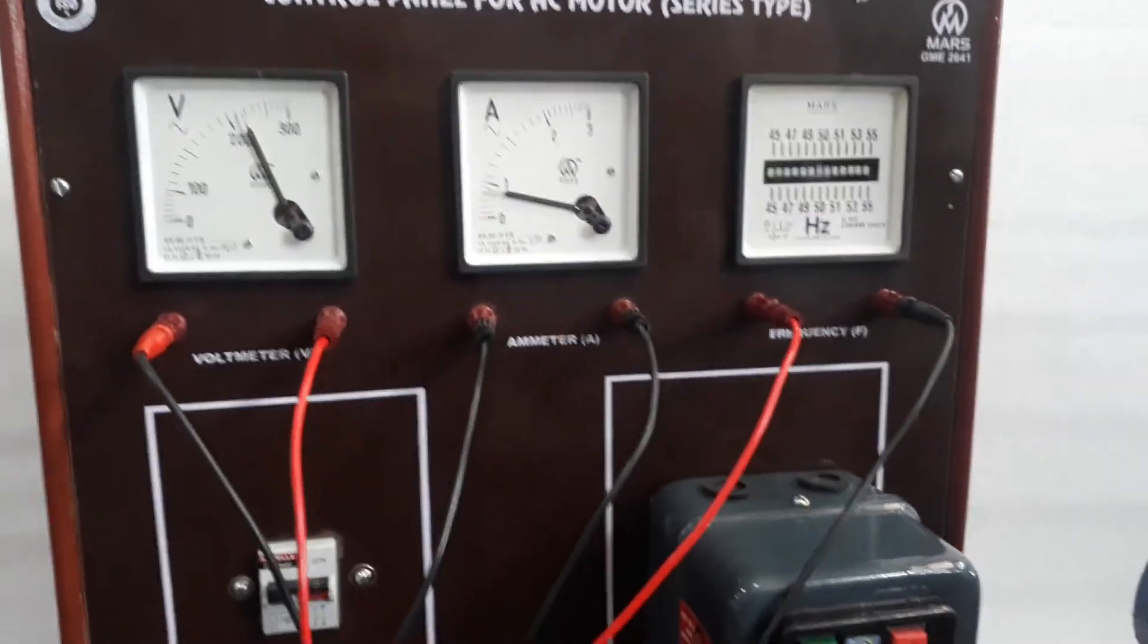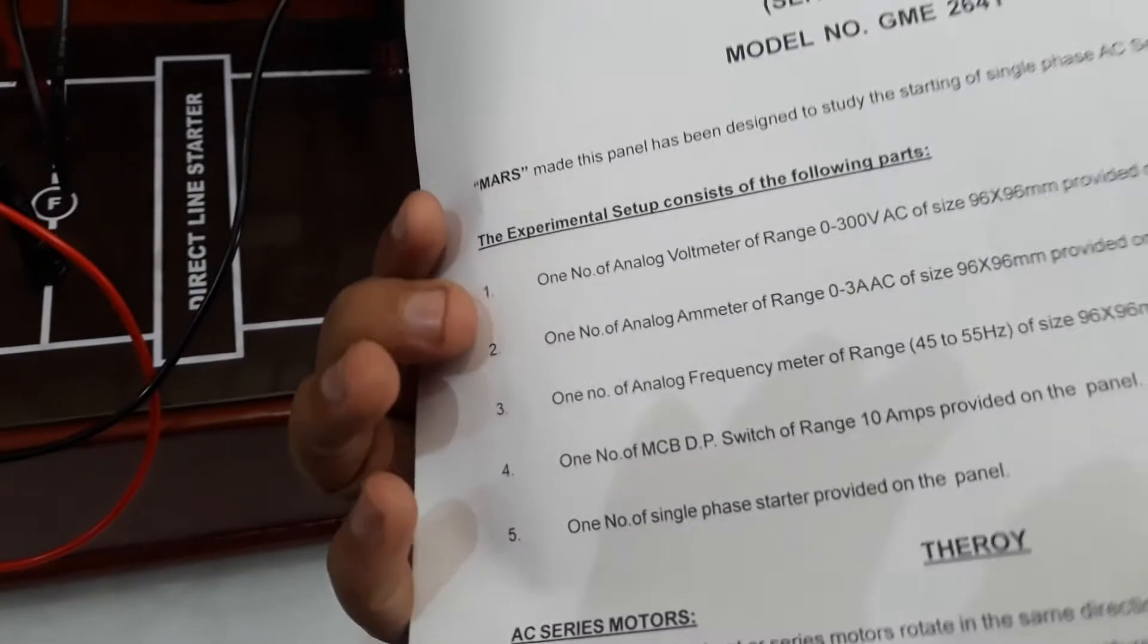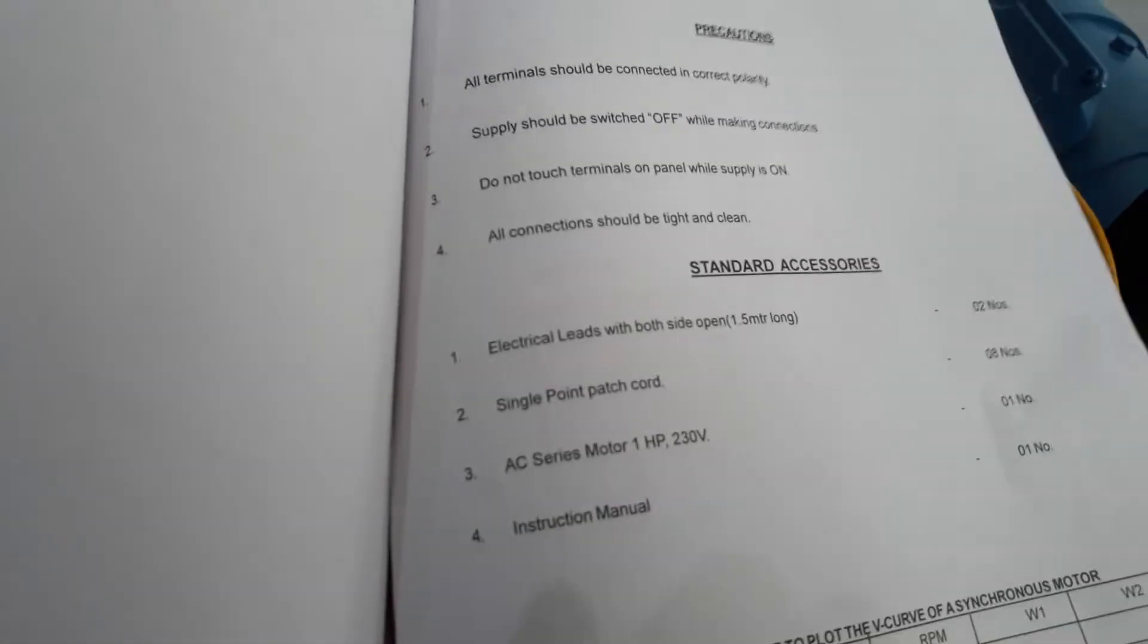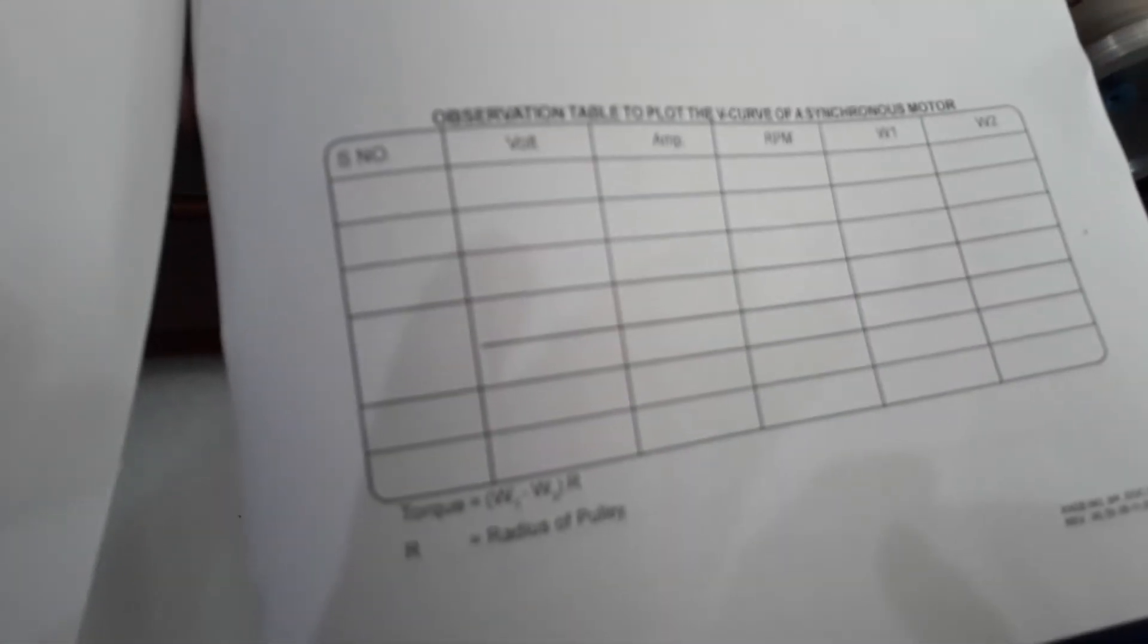According to the manual, here is manual of control panel for AC series type. This diagram and procedure, follow the step by step. And this observation table: voltage, ampere.